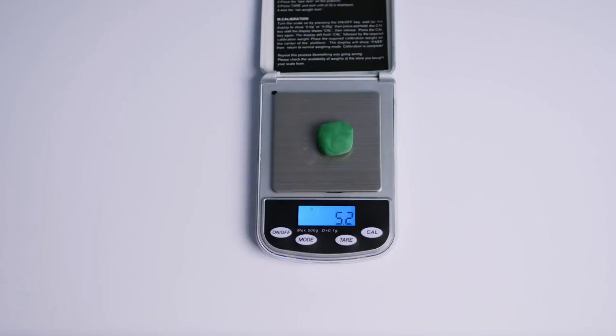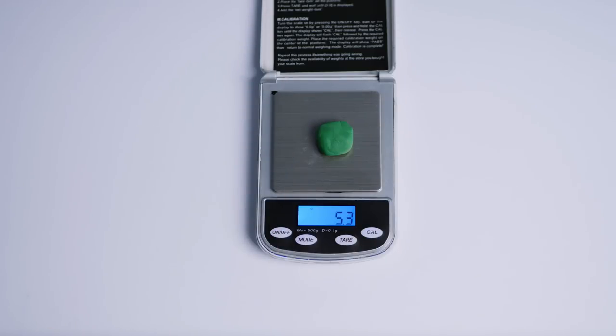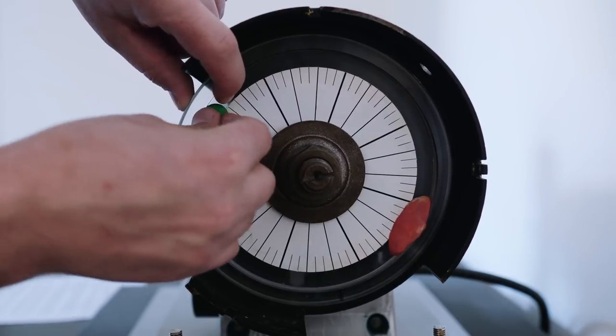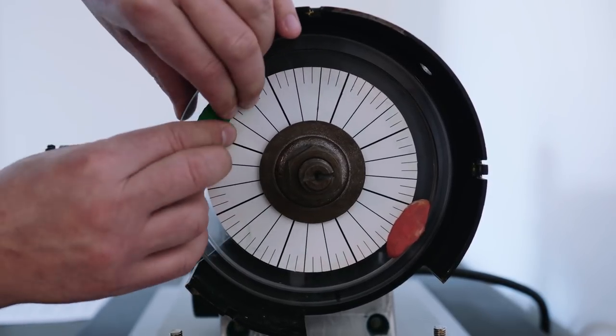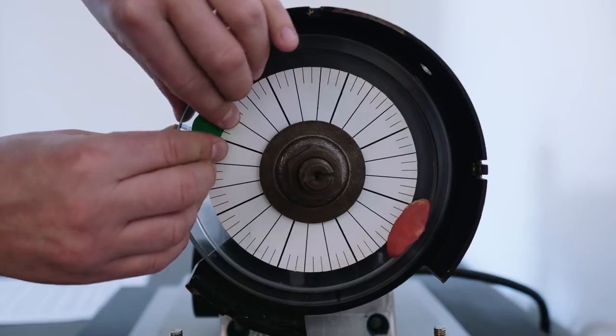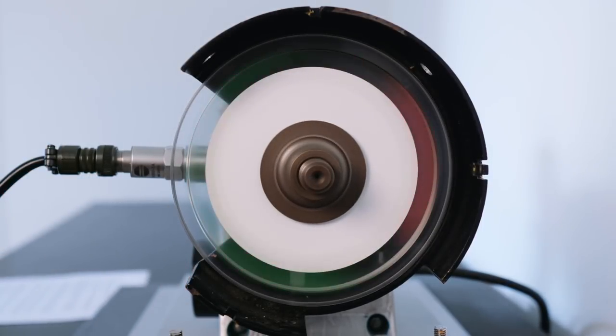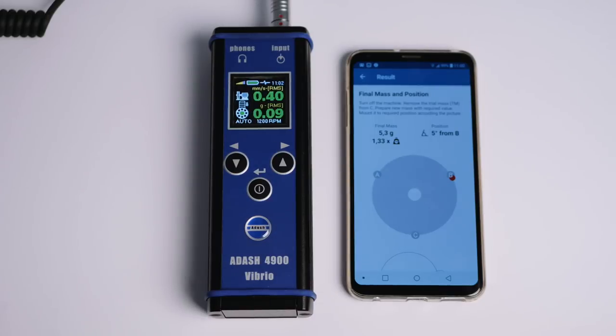I will now add 5.3 grams at 5 degrees from B as required and perform the last velocity measurement. That's great. Our initial vibrations were 5.7 millimeters per second and now they are just around 0.5 millimeters per second.